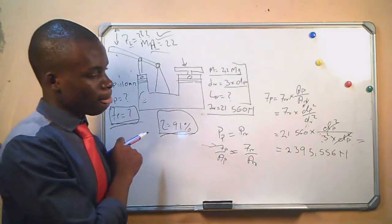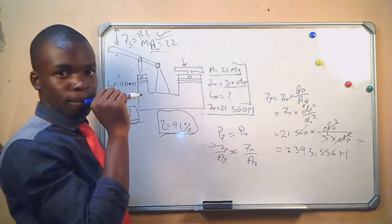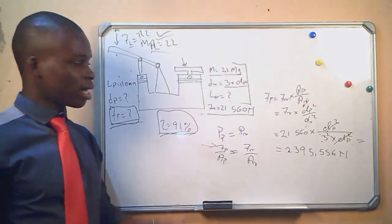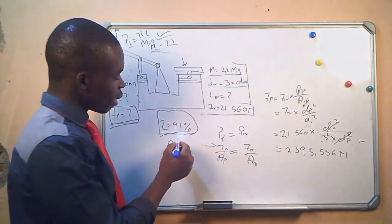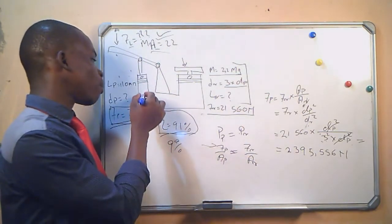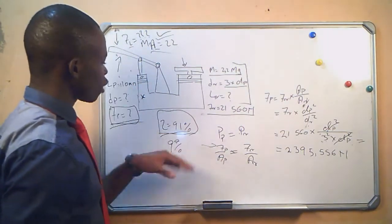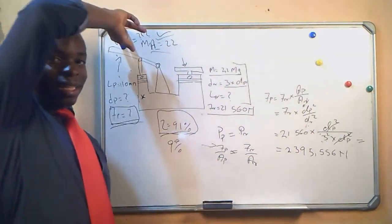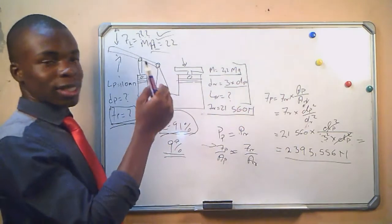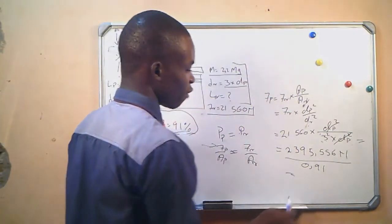We are given an efficiency of 91 percent. When we apply a force on the lever, some of the force will be lost — maybe due to friction or heat — and only 91 percent of what was applied will be delivered to the plunger. To account for this, we include the force lost by dividing by the efficiency: 2,395.556 / 0.91 = 2,632.447 newtons. This is the amount of force that would be delivered to the plunger at 100 percent efficiency — we add the 9 percent back because we are calculating the original force applied.